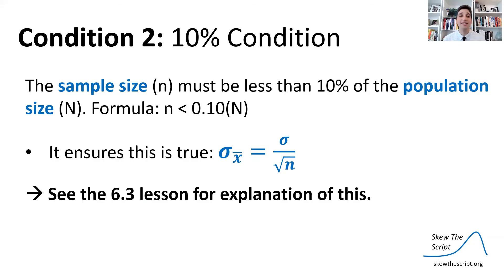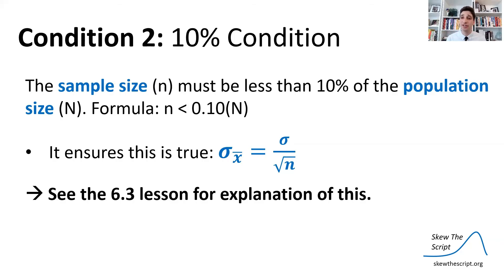Condition two is the 10% condition: our sample size must be less than one-tenth of the population size. That ensures that our calculation of the spread for our sampling distribution is accurate. It's too much math to go into at the moment — you don't necessarily need to know the math behind this for the AP exam. But if you want to see a related explanation, go to lesson 6.3 in our course sequence.